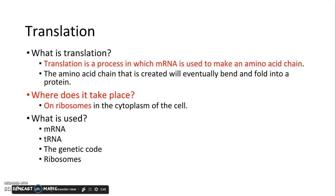Where does it take place? On the ribosomes, in the cytoplasm of the cell. What is used? The four things that are used are mRNA, tRNA, the genetic code, and ribosomes.